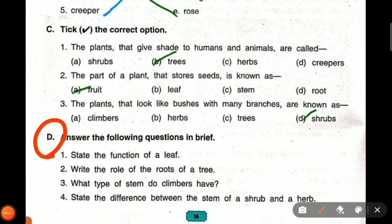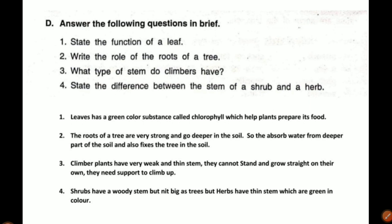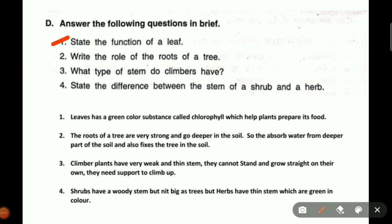Now, section D: answer the following questions. First question: state the function of a leaf. Leaves have a green color substance called chlorophyll. We read that — chlorophyll helps plants prepare their food.